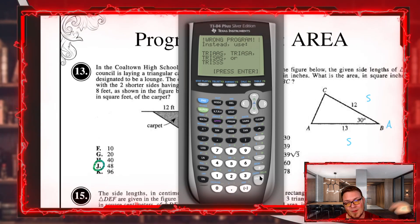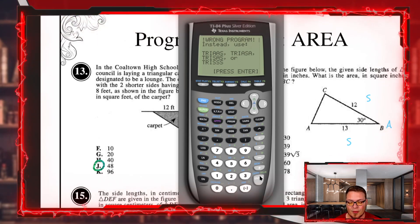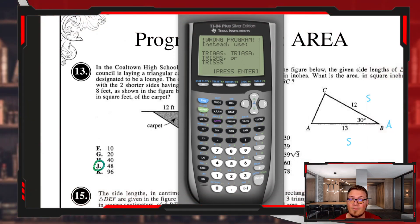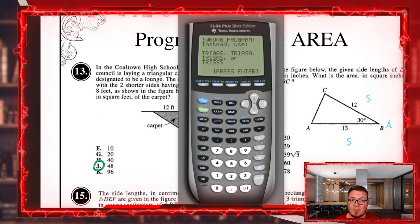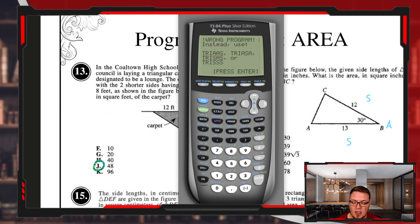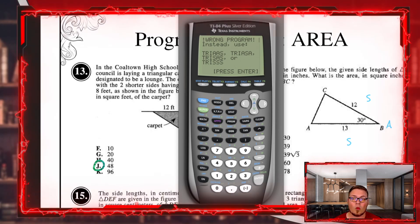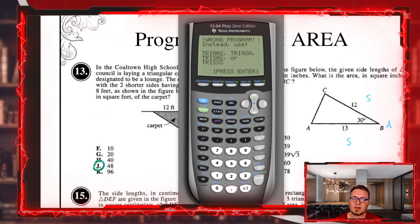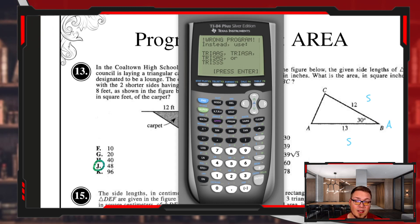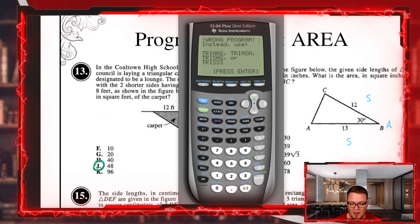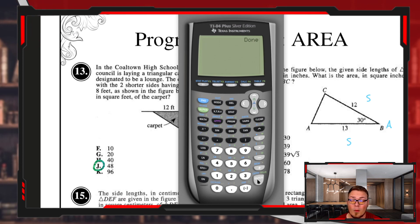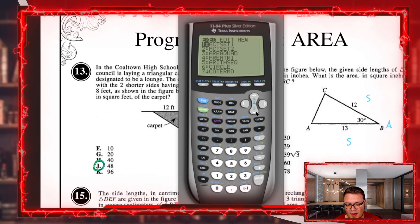The program you're looking for is either tri AAS, tri ASA, tri SAS, or tri SSS. Those will be covered in a video later in the playlist. If you're looking for the area of a weird triangular shape like this where you have angles, you're definitely going to use those other programs. But at least now it's built into this program to tell you to go over there.